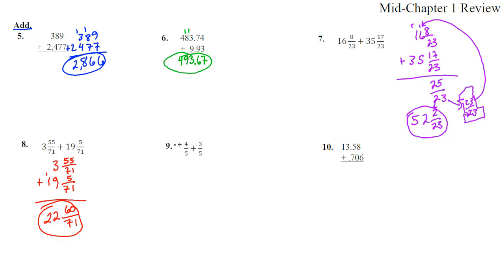Next one, number 9, 4 fifths plus 3 fifths. Common denominator, we could have 7 fifths, but notice that breaks up into 5 fifths, which turns into a 1, and gets carried over. So we have 1 and, how much is left here, 2 fifths. If we took 5 of those fifths, made 1, and then carried it over to make that 1, we get 1 and 2 fifths.